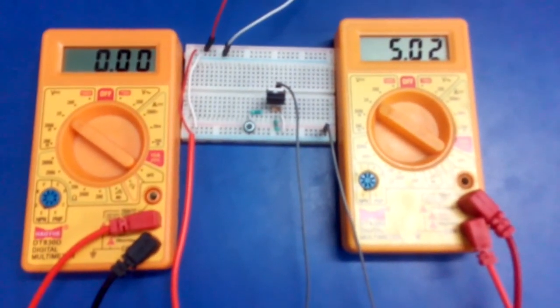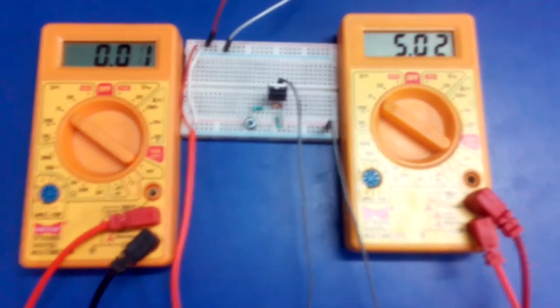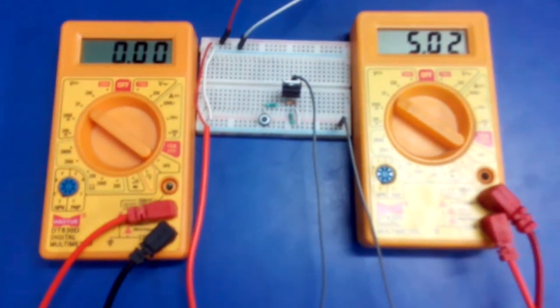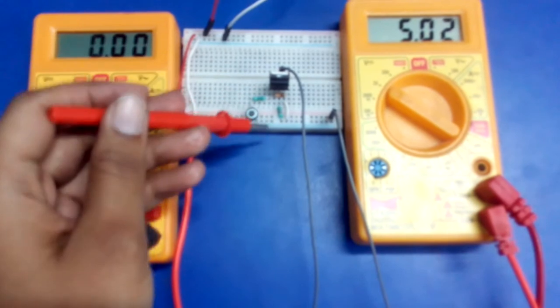This is a demonstration video for low side and high side MOSFET. Here is a circuit for low side configuration with a five volt power supply. In this configuration, the load is connected between drain and plus five volt.